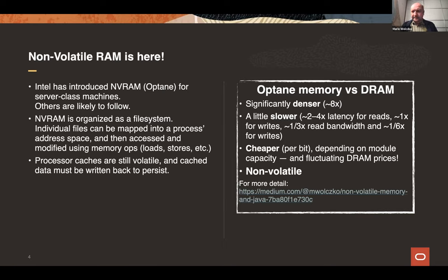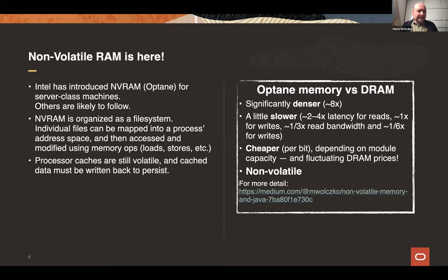It's a little bit slower for reads and a reasonable amount slower for writes, with about the same bandwidth, and it can be cheaper — DRAM prices have been all over the map this last year, so it depends on what you compare with and when. It's probably not going to be more expensive per bit than DRAM. But the most important property from the point of view of this presentation is that it's non-volatile: when you take the power off, whatever was saved in one of those modules will still be there when you put the power back on.